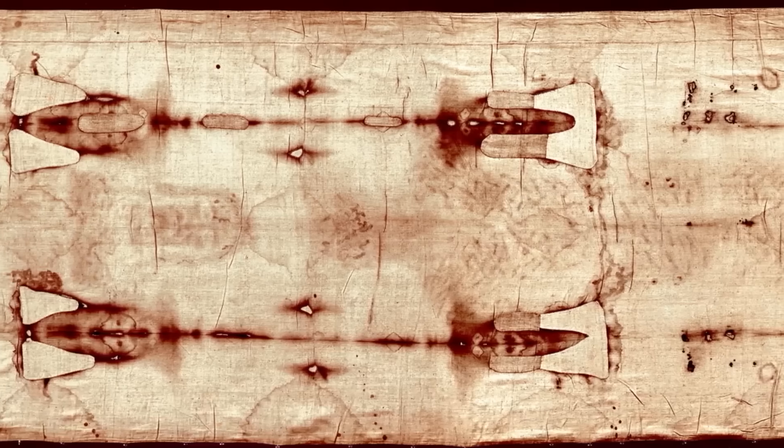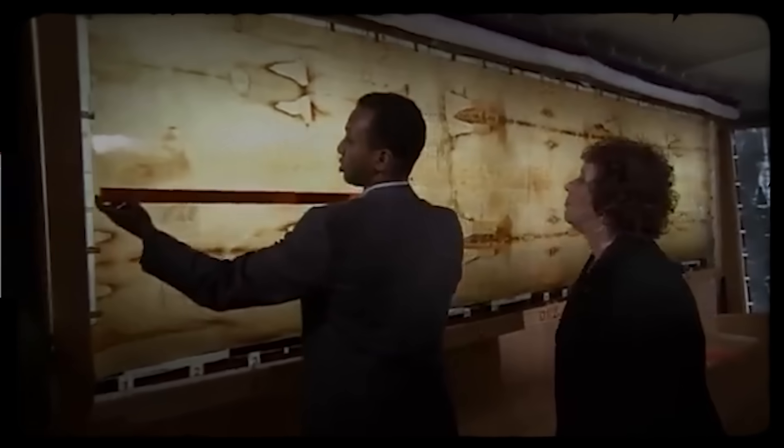The distance between the eyes, the proportions of the hands, the curvature of the ribs, they all seemed to be linked by an underlying geometric scaffolding. These patterns were invisible to the human eye, buried in the visual noise of the fabric's weave and centuries of damage. But the AI saw them clearly.